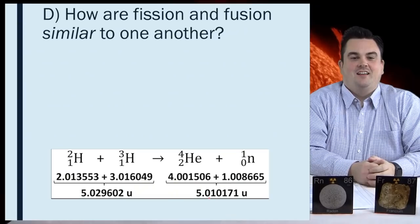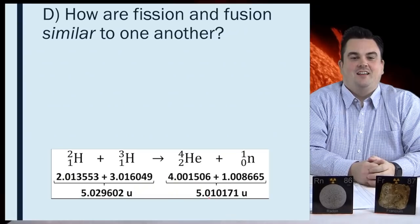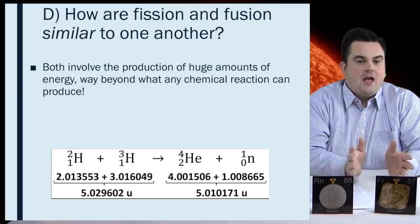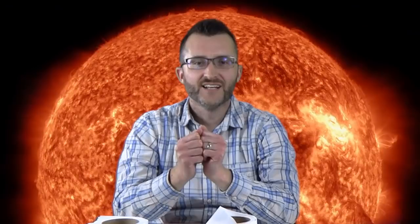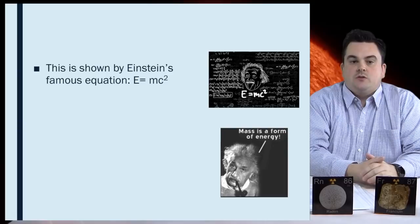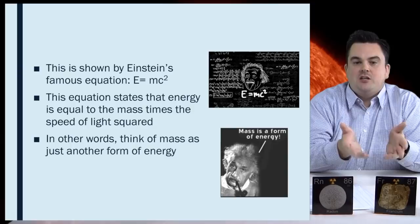How are fission and fusion similar to one another? Both involve the production of huge amounts of energy, way beyond what any chemical reaction can produce. This is due to a very small amount of matter in the nucleus being converted into energy. Notice in the equation below that the masses of the reactants in fusion are actually a little bit higher than the mass of the products of the fusion reaction. This is shown by Einstein's famous equation E equals MC squared. This equation states that energy is equal to the mass times the speed of light squared. In other words, think of mass as just another form of energy. Energy is thus conserved in this process.